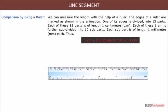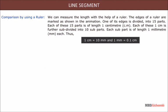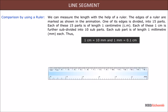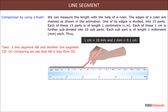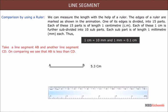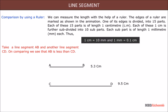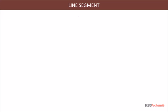Take a line segment AB and another line segment CD. On comparing using a ruler, we see that AB is less than CD.